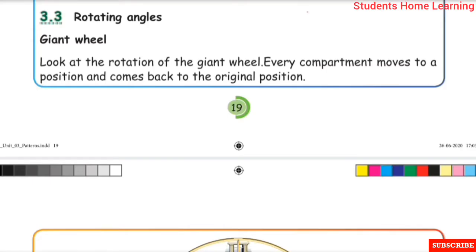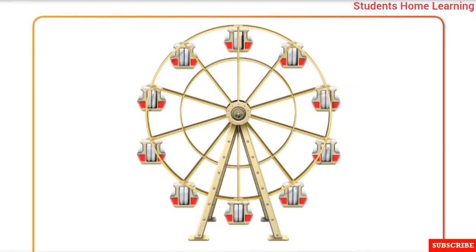Rotating Angles. Let us see how angles rotate. Giant Wheel — look at the rotation of the Giant Wheel. Every compartment moves to a position and comes back to the original position. This is the Giant Wheel.